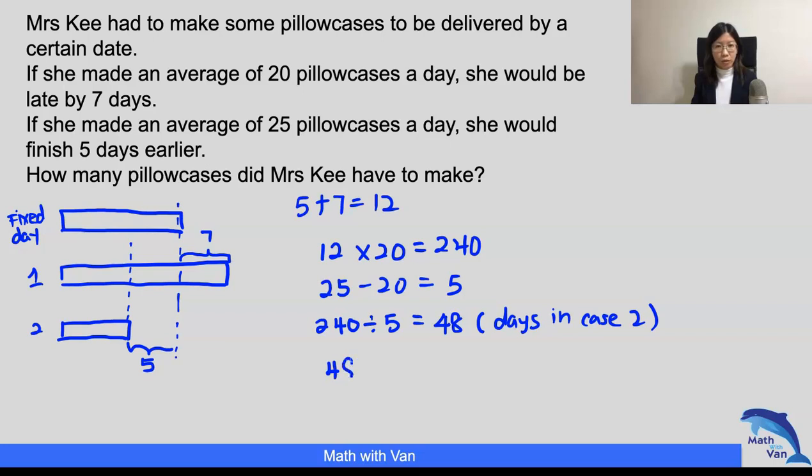So with that, to find the number of pillowcases that she made, 48 times 25, which is 1,200. So now I know that it is 48. So I could do a check as well. In scenario one, she took 48 plus 12, which is 60 days. So this is my check here. 60 days times 20, you see that I get the same answer as 1,200.